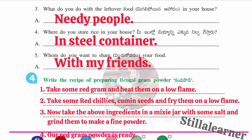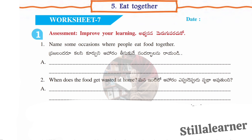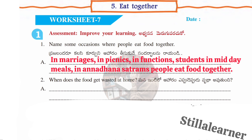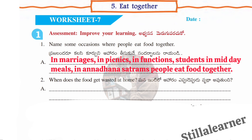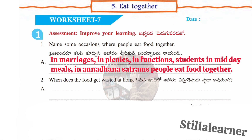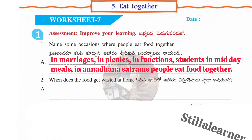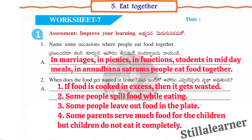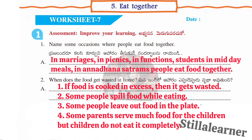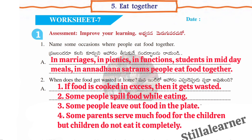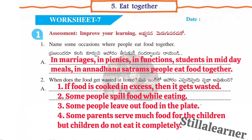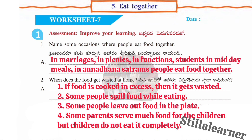Now we'll move to Worksheet 7 with question and answers. First question: name some occasions where people eat food together. Answer: in marriages, picnics, functions, midday meals, and annadana satrams. Second question: when does food get wasted at home? Answer: if food is cooked in excess it gets wasted; some people spill food while eating; some people leave food on their plate; some parents serve too much food for children but children do not eat it completely.